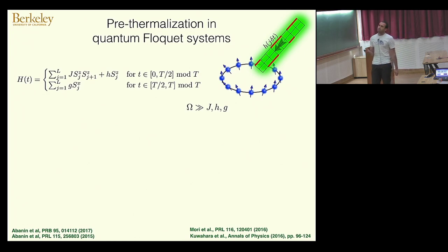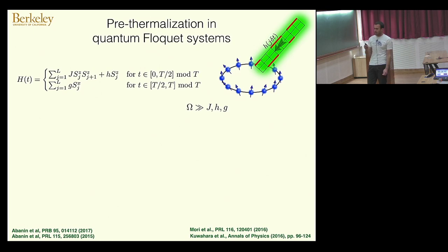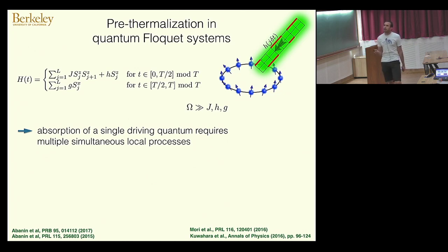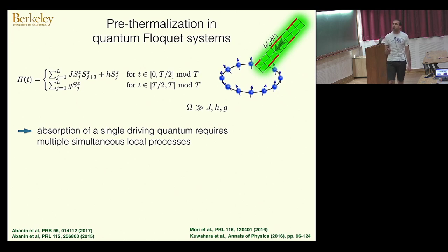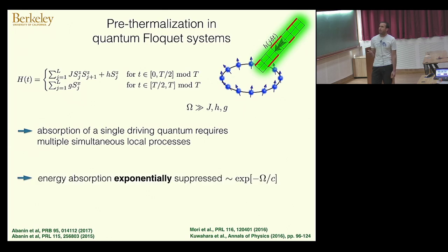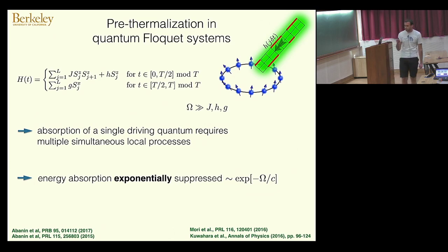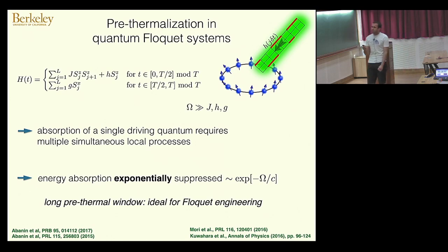We know that energy, taking the drive frequency into account, has to be conserved. So if my system is going to absorb an energy quantum from the drive, I need to find a way to accommodate that quantum in terms of local spin-flip processes. However, the frequency is much larger than local energy scales, so I need many such processes. When we have a large number of processes, the energy absorption is exponentially suppressed in the driving frequency. This justifies the existence of the long pre-thermal window.